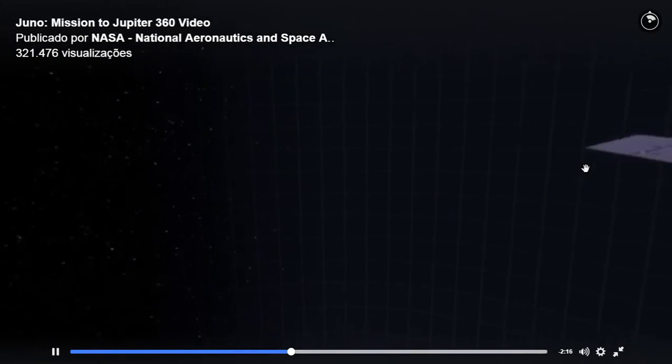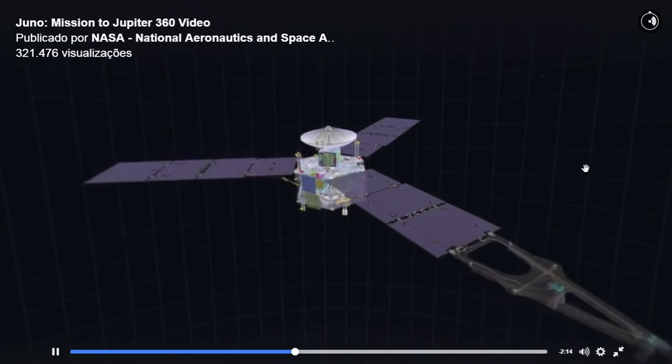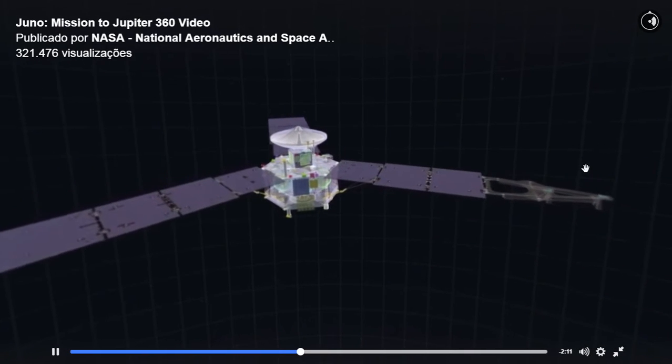Jupiter is so far from the Sun that sunlight here is 25 times weaker than at Earth.